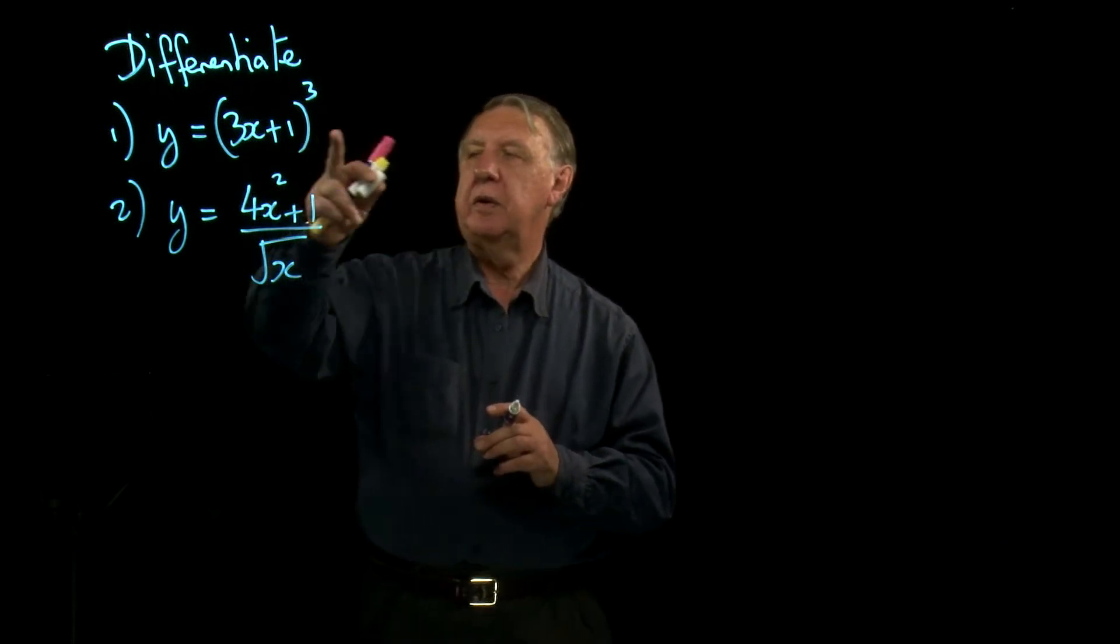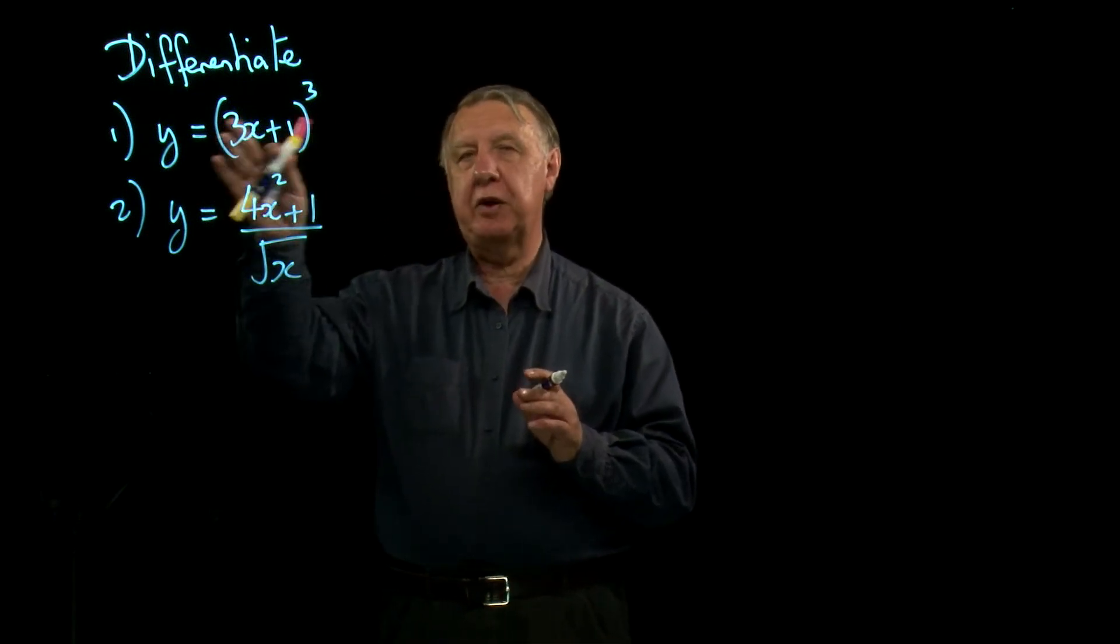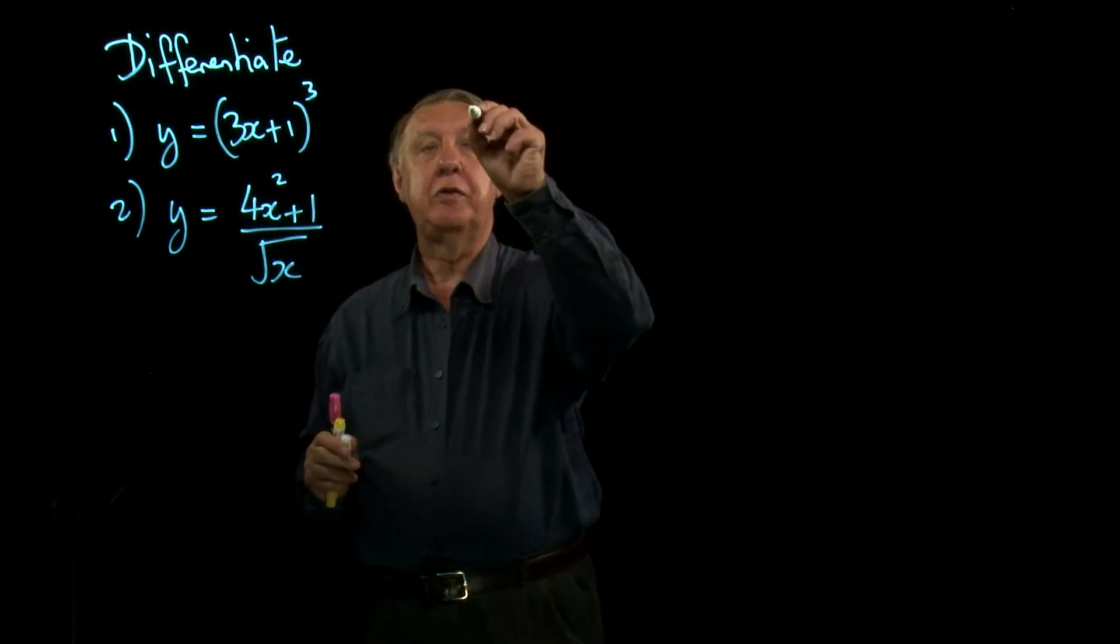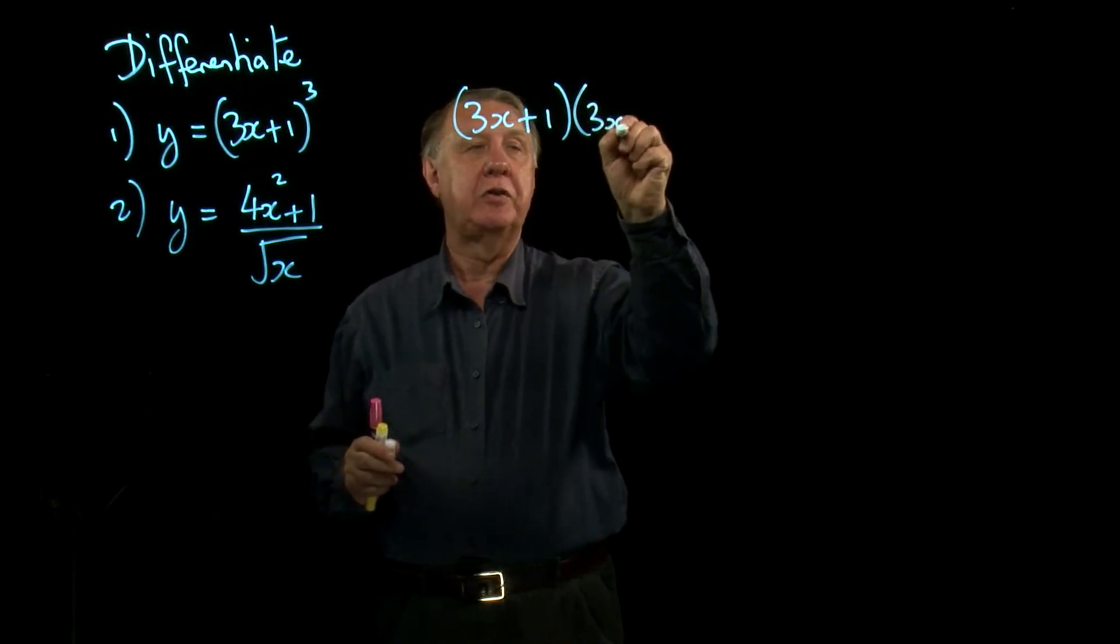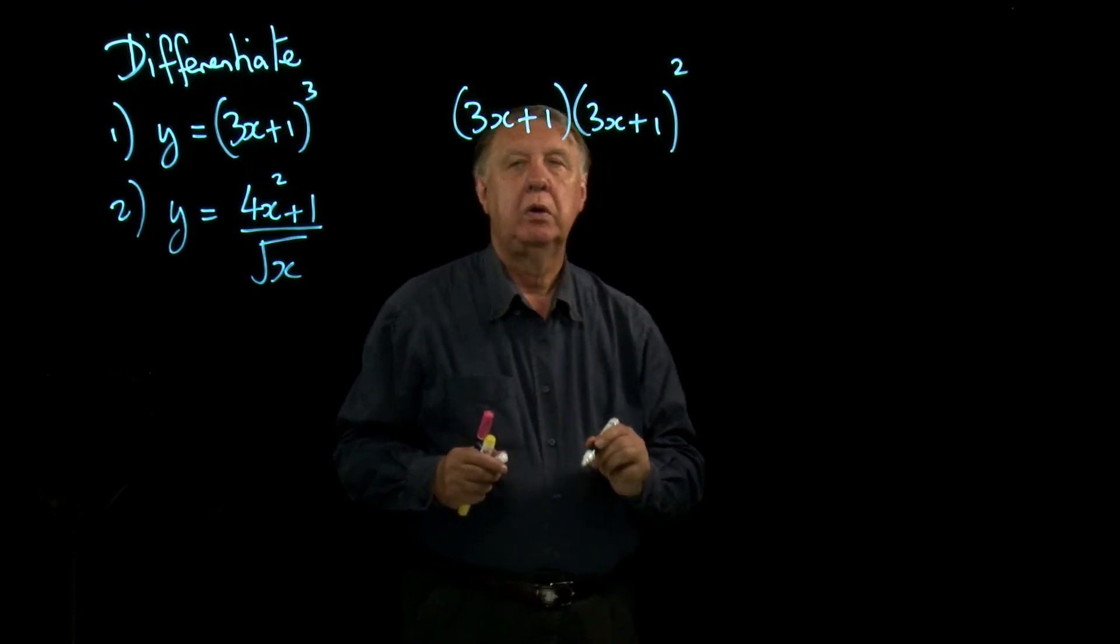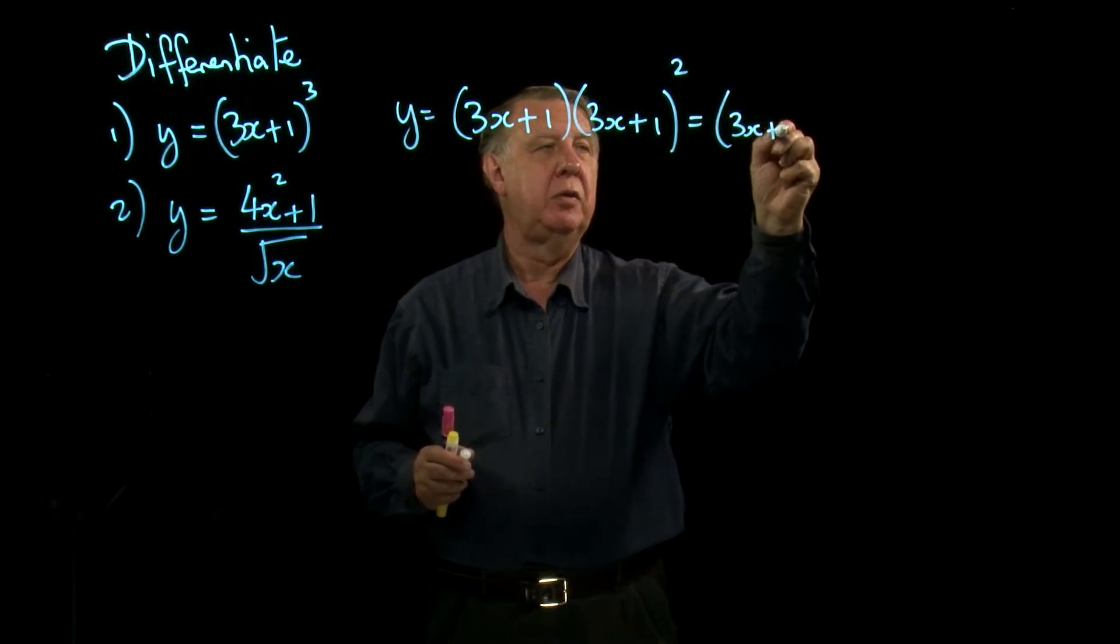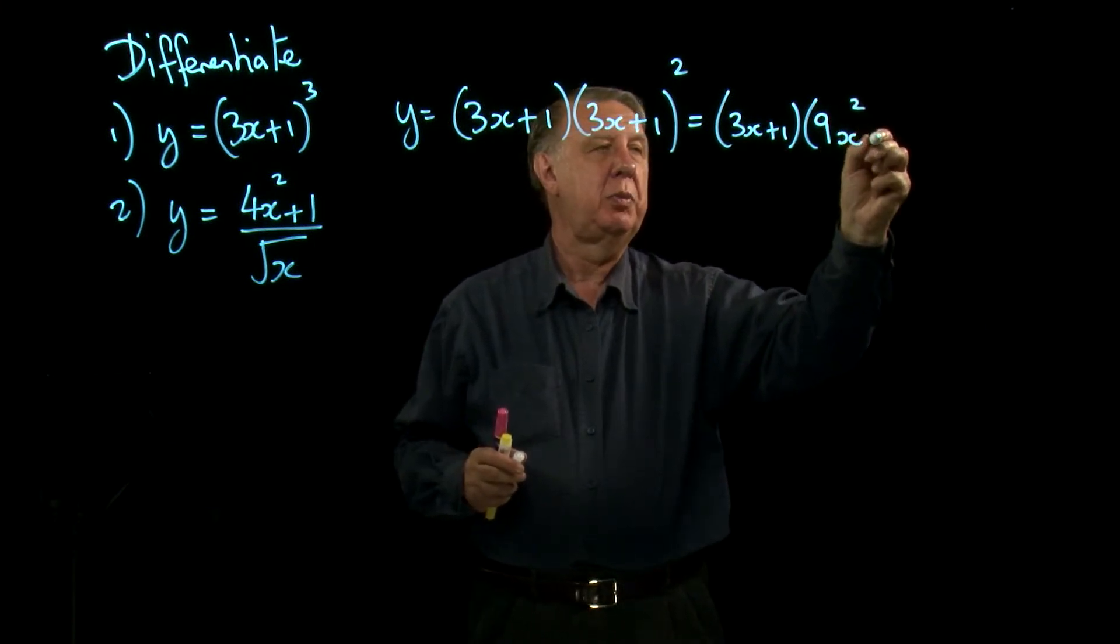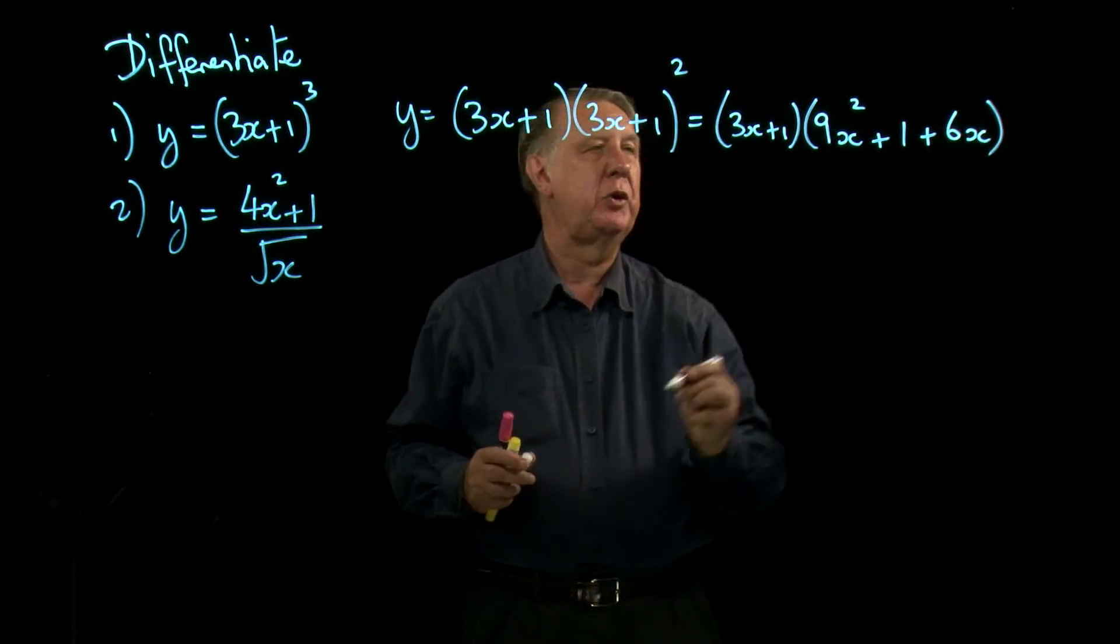So this expression here, the only way you've got at this stage of differentiating that is to expand out the bracket. So 3x plus 1 cubed means 3x plus 1 times 3x plus 1 squared. So that's 3x plus 1 times square this out, first squared plus the second squared plus twice the product.